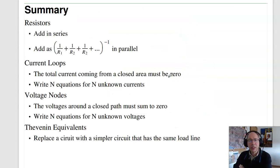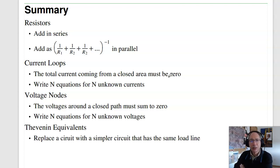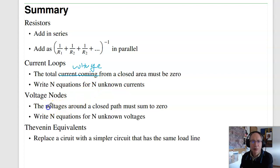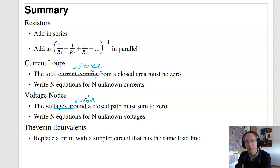In summary: if I have a resistor circuit, I can simplify it — resistors in series add; resistors in parallel add as the sum of inverses, inverted. To solve a circuit I can use current loops, voltage nodes, or Thevenin equivalent. Current loops says the total voltage around a closed path adds to zero — write N equations and unknowns. Voltage nodes says the current from any closed surface sums to zero — write N equations and unknowns. Thevenin equivalent replaces the circuit with a simpler one having the same load line. That's Lecture 1 for ECE 320 Electronics 1.